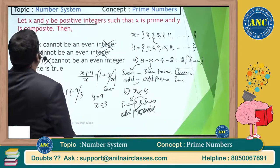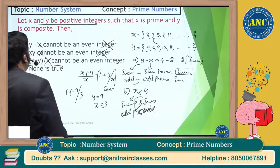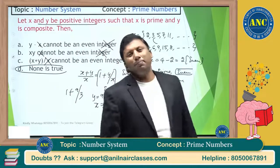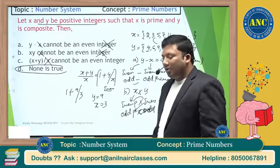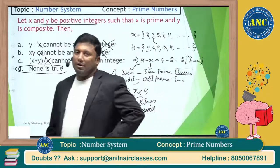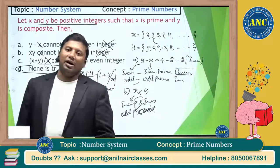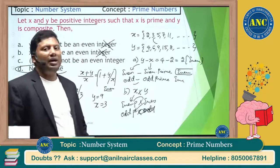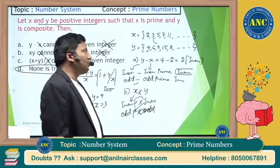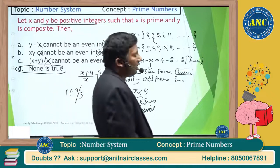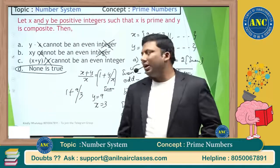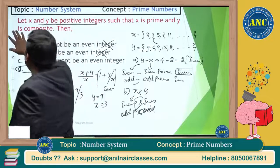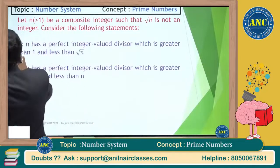The answer is none of the options are true. Prime numbers include both even (2) and odd primes. Composite numbers can also be even or odd. So no universal statement can be guaranteed. The answer is 'None of them is true.'